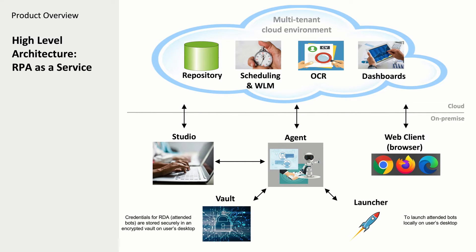If you briefly look at the underlying architecture, every computer that you want to use to run your developed automations — your bots — you need to install the agent, which is the runtime environment. If you are doing development on that computer you also need to install the studio. To enable attended automation you need to install the launcher application. You also most probably want to install the local credential vault so the user can securely manage all the needed credentials for the different automations they will trigger on demand.